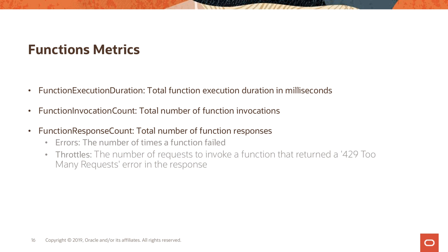This brings us to the end of part two. We discussed the core concepts of the Oracle Functions service — applications, functions, invocations, and triggers. We looked under the hood at what happens when you deploy and invoke an Oracle Function, reviewed the IAM policies needed, and covered the metrics collected and displayed in the OCI console. Thank you for your time, and I look forward to having you join part three, where we'll look at use cases and a live demo of the Oracle Functions service in action.